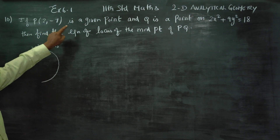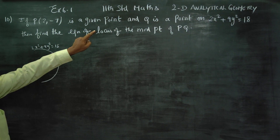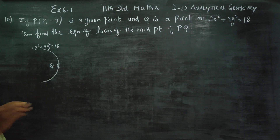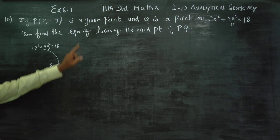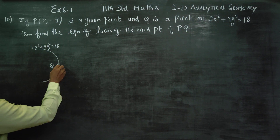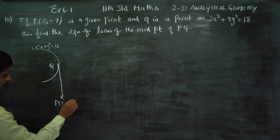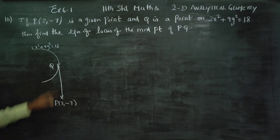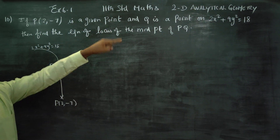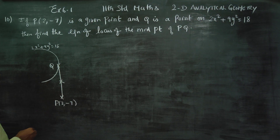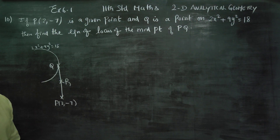P(2, -7) is a given fixed point, and Q is a point on the curve. We need to find the locus of the midpoint of PQ. We call the midpoint R, and we need to find the locus of R.